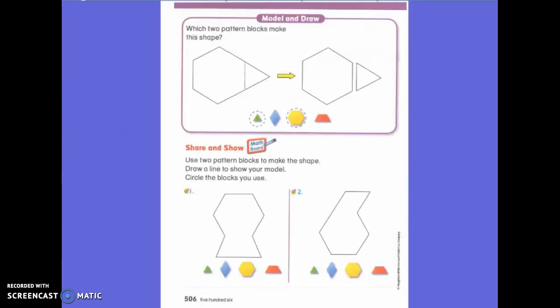So today we're going to have to read the directions, and this says which two pattern blocks make this shape. Now, we have discovered that I can use a lot of triangles to make the hexagon. Okay, so I can use one, two, three, four, five, six, seven shapes to make this shape.